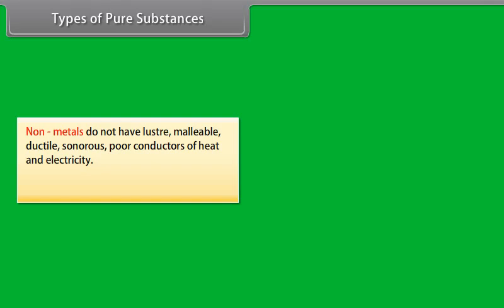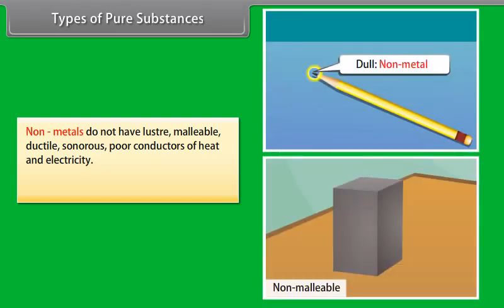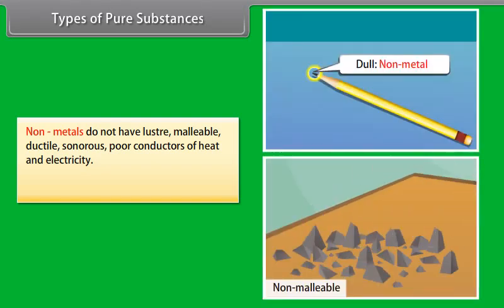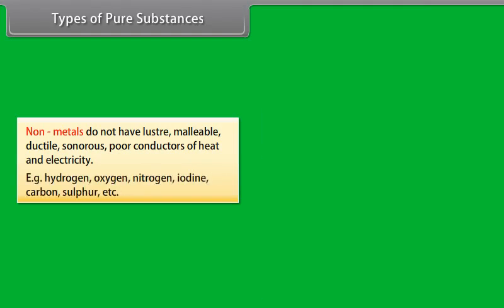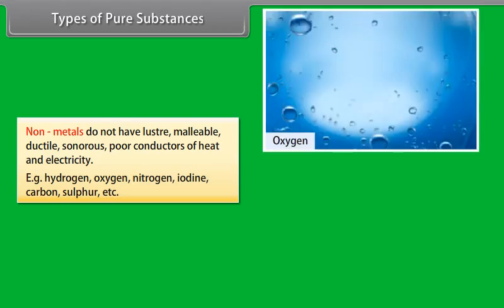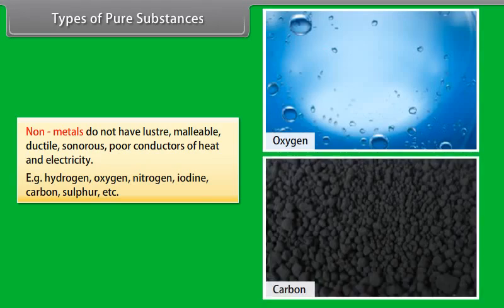Non-metals do not have lustre, malleability, are not ductile or sonorous, and are poor conductors of heat and electricity. Examples include hydrogen, oxygen, nitrogen, iodine, carbon, sulfur, etc.